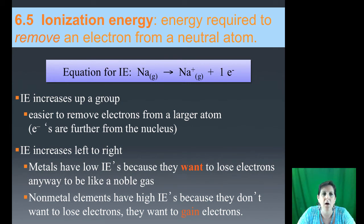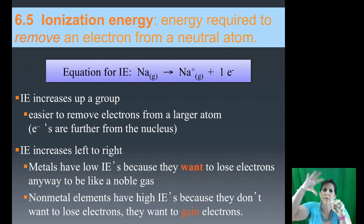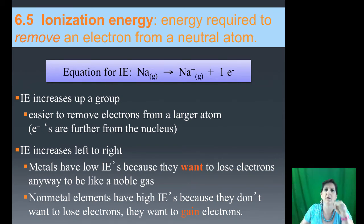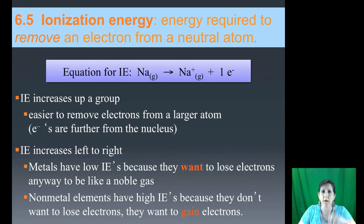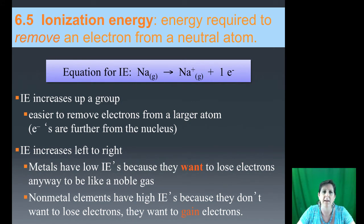Ionization energy increases going up a group because it's very hard to remove electrons from a tiny atom — the electron is very close to the proton, and opposites attract. It's very hard to remove that electron because it's so close to the nucleus. For a big atom, the electron is far away from the nucleus, so there's not much attraction and it's much easier to remove. It takes more energy to remove an electron as we go up a group.